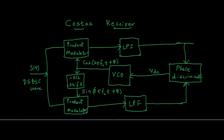You will see the block diagram and I will show you what each block means. This Costa's Receiver consists of two coherent detectors — one in the upper side and one below. Each coherent detector is a product modulator followed by a low-pass filter, and both are supplied with the same input DSBSC wave.